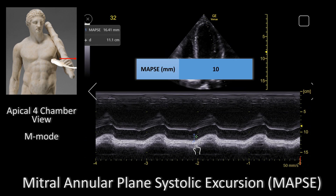This table shows you the normal value for MAPSE. A MAPSE of more than or equal to 10 millimeters corresponds to an ejection fraction of more than or equal to 55 percent. In this patient we measured the MAPSE to be 16 millimeters, so that's more than 10 millimeters. Therefore, in this patient we are estimating the ejection fraction to be more than 55 percent.